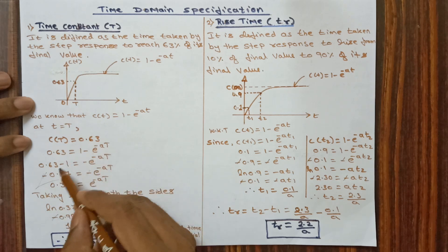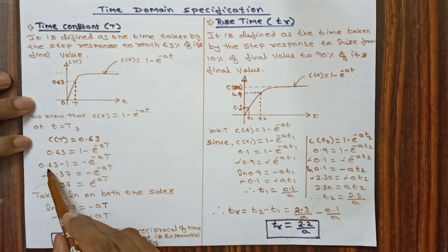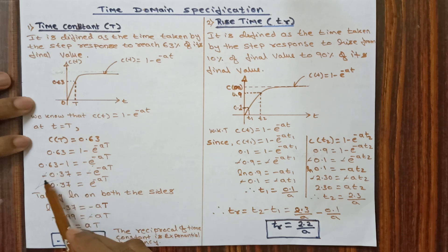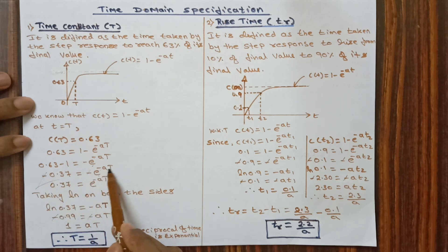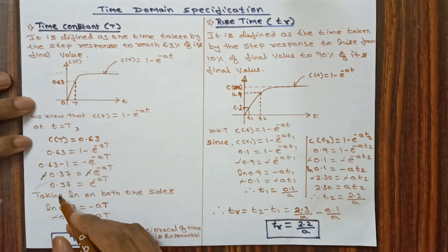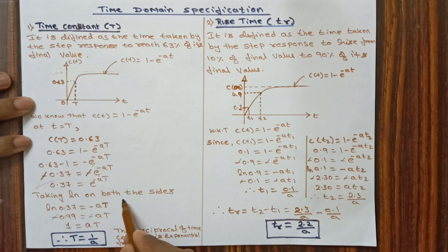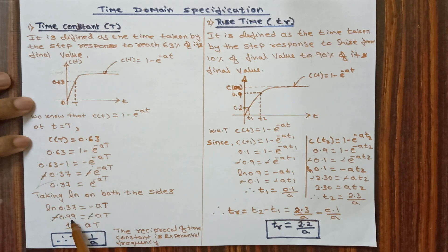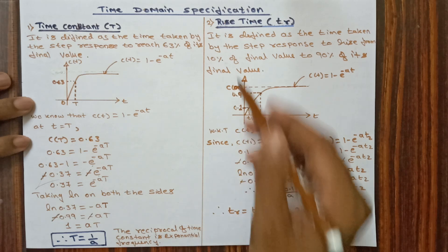From the equation, 0.63 equals 1 minus e power minus aT. Rearranging: 0.63 minus 1 equals minus e power minus aT, giving minus 0.37 equals minus e power minus aT. The negatives cancel, so 0.37 equals e power minus aT. Taking log on both sides: log 0.37 equals minus aT. Log 0.37 is approximately minus 0.99, which is approximately minus 1, so therefore T is equivalent to 1 by a. The reciprocal of the time constant is the exponential frequency.